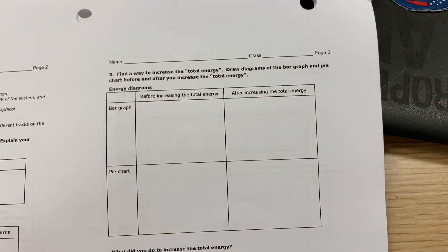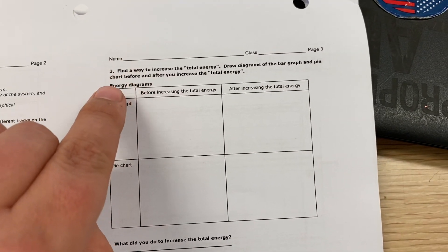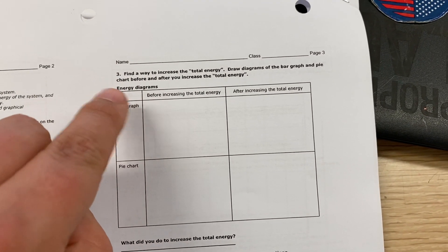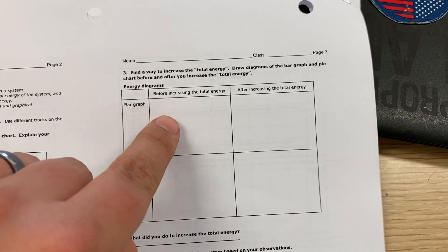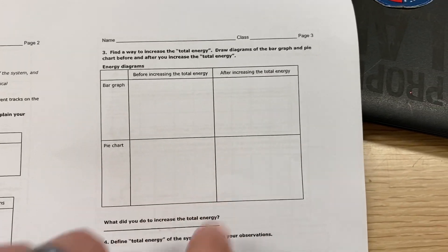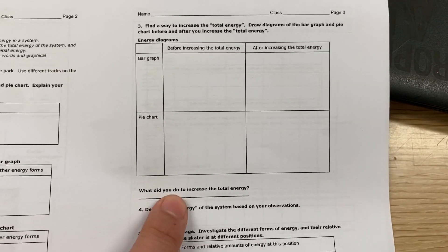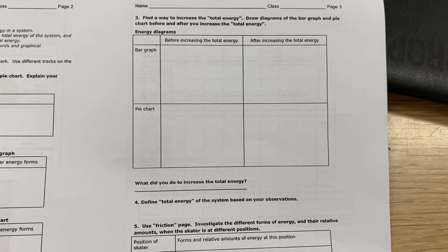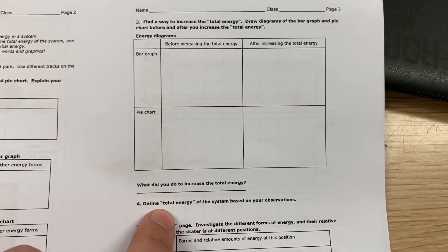You've got a diagram. What the bar graph looks like before you increase the total energy and after you increase it. What the pie chart looked like before and after. Explain how you increase the total energy. Define what total energy is. Make an equation.